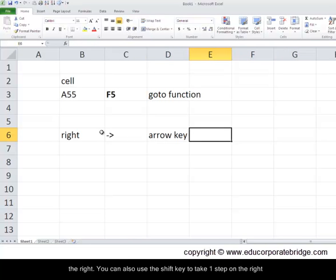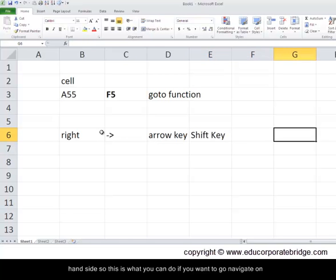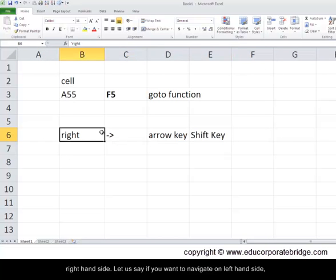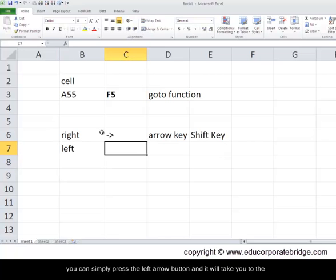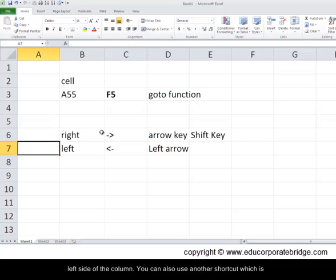You can also use the shift key to take one step on the right hand side. So this is what you can do if you want to navigate on the right hand side. Let's say if you want to navigate on the left hand side you can simply press the left arrow button and it will take you to the left side of the column.